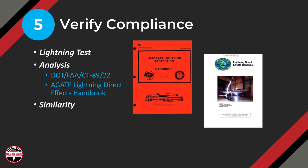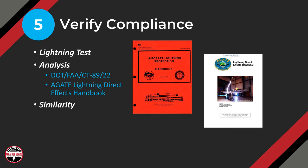Step five: once you've identified how you're going to protect parts, how do you justify it to EASA, FAA, or any other certification authority? This is mostly done by lightning tests today. There are cases where you can do it via analysis if you have previous test data or significant aircraft service history. There is an aircraft lightning protection handbook available on the internet, and also an AGATE lightning direct effects handbook with data about lightning damage to carbon fiber and fiberglass structures protected with various foils and paints.